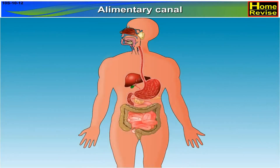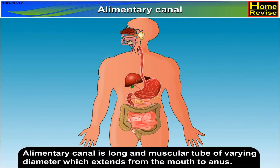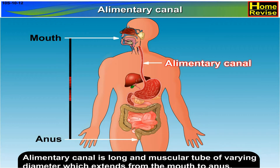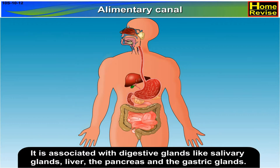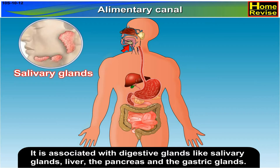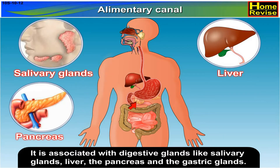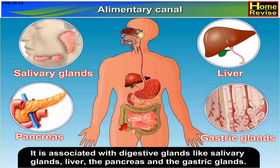The alimentary canal is a long and muscular tube of varying diameter which extends from the mouth to the anus. It is associated with digestive glands like salivary glands, liver, the pancreas, and the gastric glands.